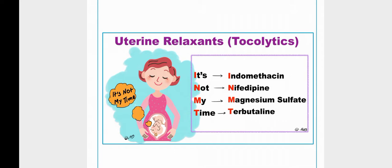Prostaglandins are important for uterine contraction, so by inhibiting their production, NSAIDs are used as tocolytics. Prostaglandin E1 relaxes smooth muscle in the ductus arteriosus, and this is important in the management of transposition of the great vessels.